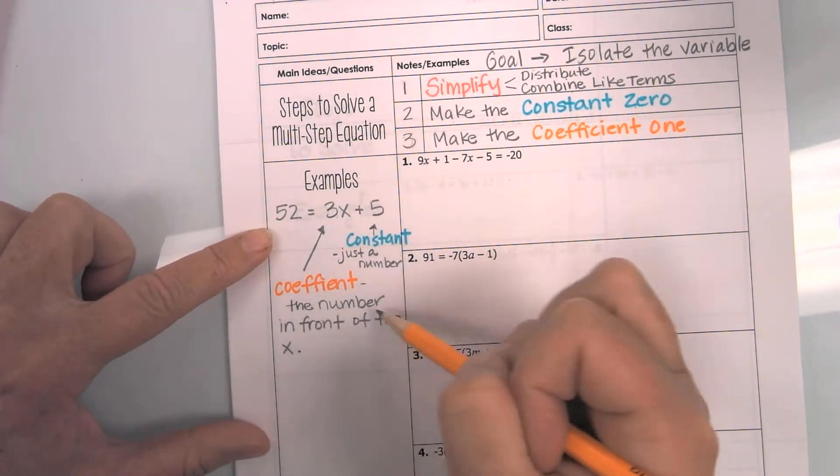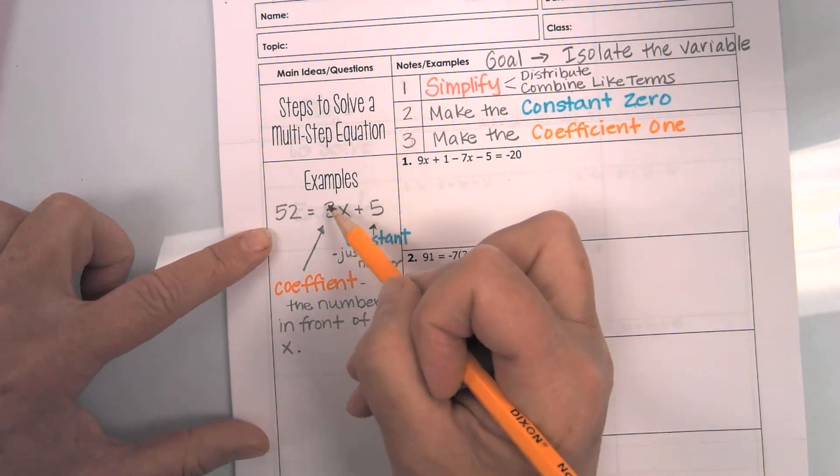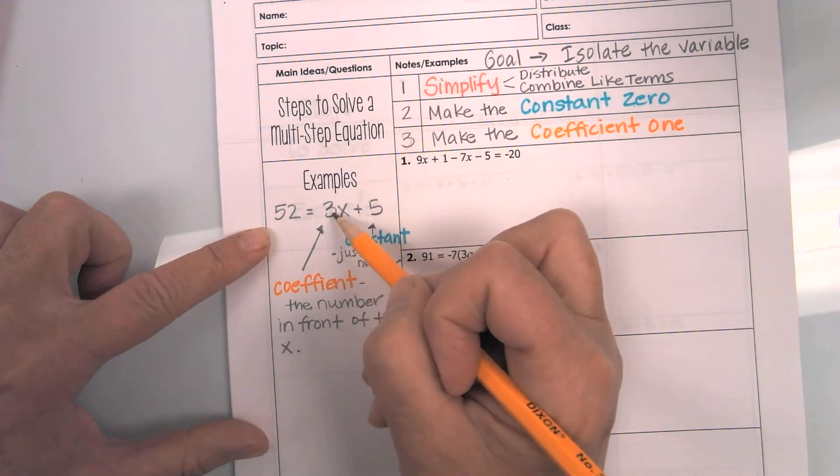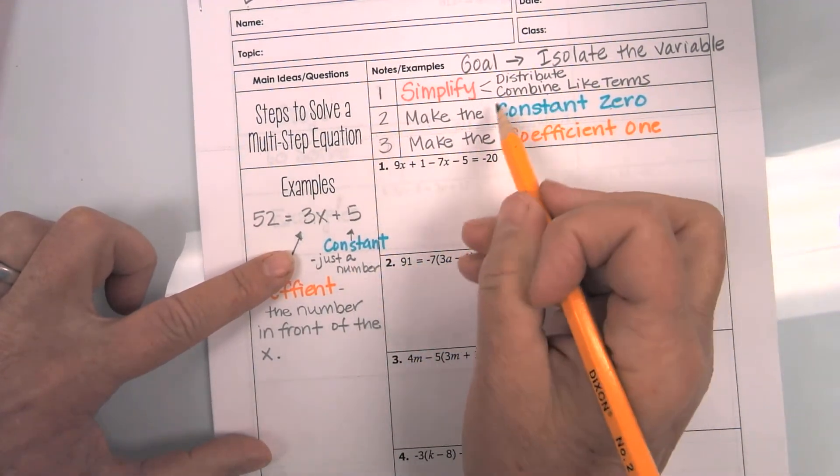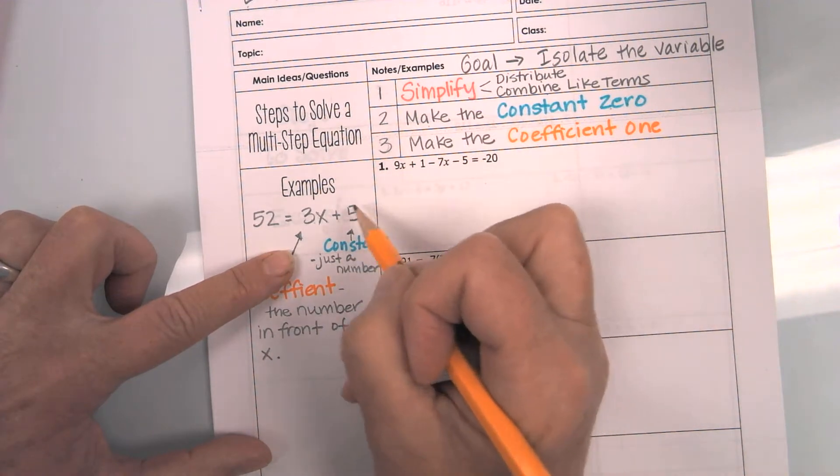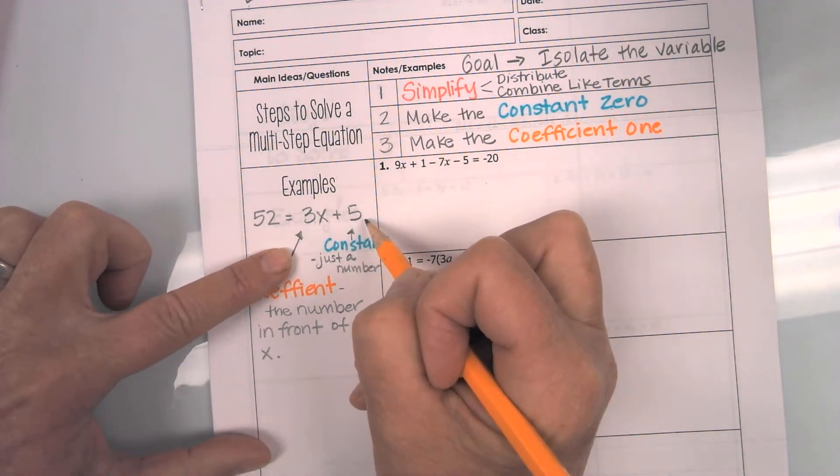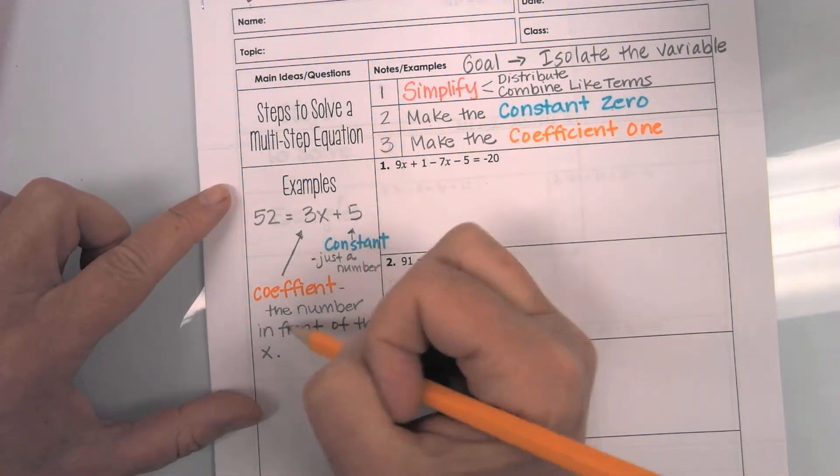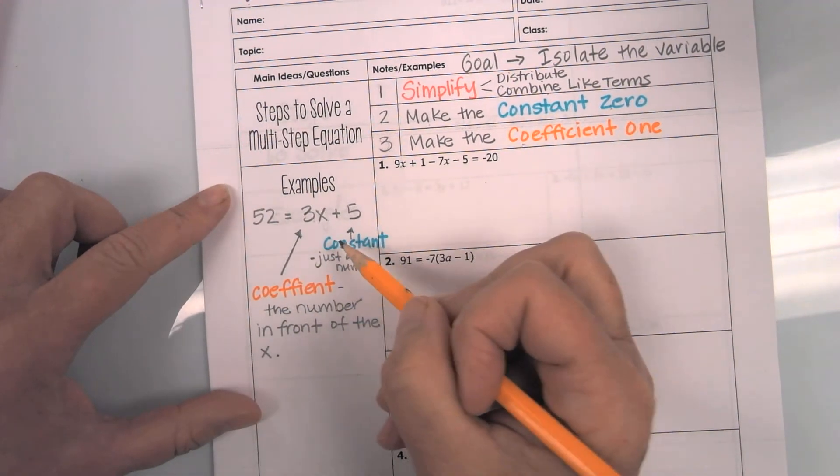our coefficient is the number in front of the x. So, here's our x value, and the number in front is the coefficient. Our constant in this set of instructions is our number. It is just a number. Notice that there is no variable. So, at any point that you forget what we're doing, make sure you follow the steps and remember the vocabulary.